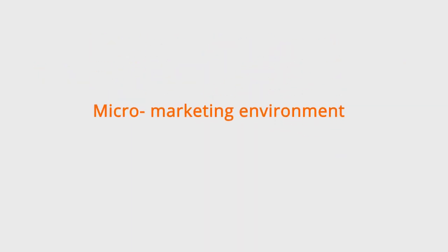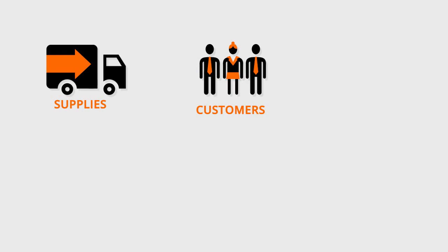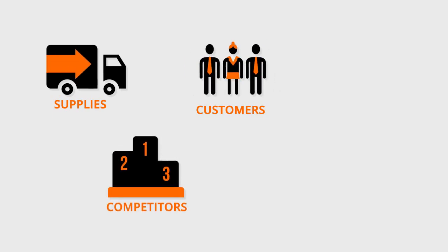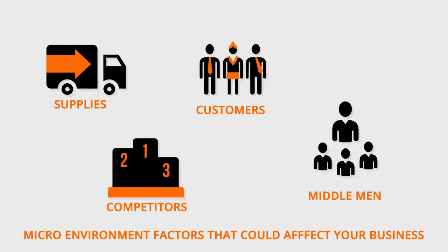Let's move to the micro marketing environment. Some of those things within that environment include your competitors, your suppliers, the middlemen, and the public. The suppliers are part of the value chain that supplies you the materials you need to get the finished good or service to your customers. Your competitors are those that have a substitute to the product or service you have. The middlemen are those people that could be the link between yourself and your customer.